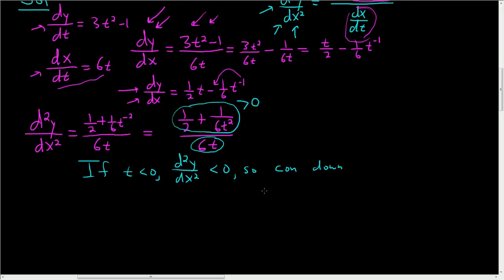And if t is greater than 0, so if t is greater than 0, then 6t is greater than 0. So the second derivative is greater than 0. So it's concave up.